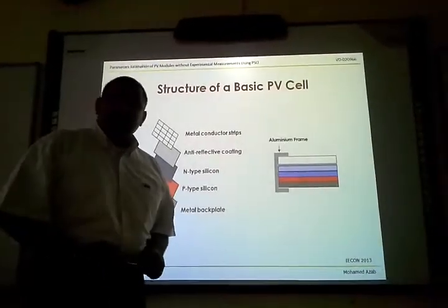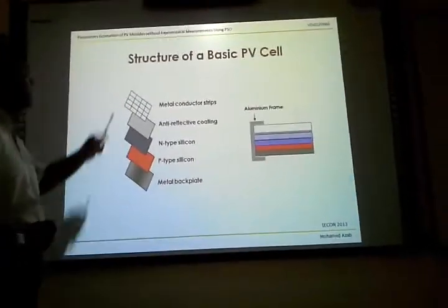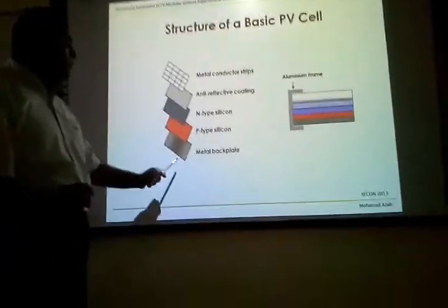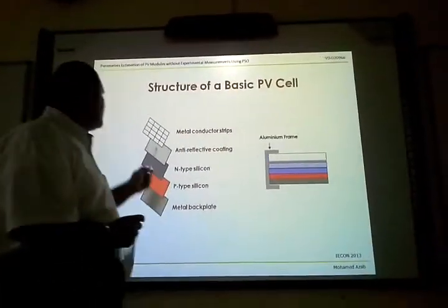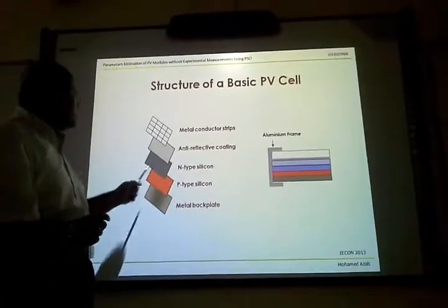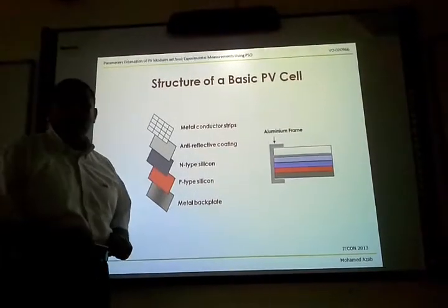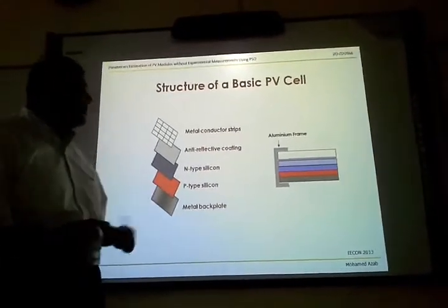The basic PV cell consists of the following layers: upper metal conductor structure and the lower metal plate, back plate for electric connections, anti-reflecting coating, and two semiconductor layers, one of N type and the other of P type.